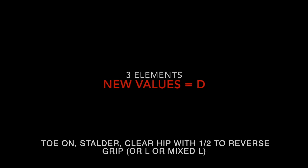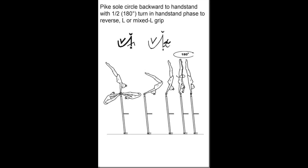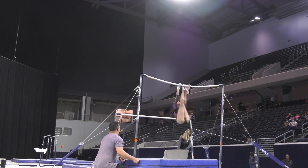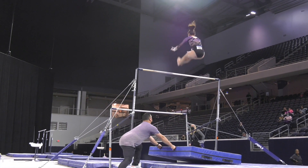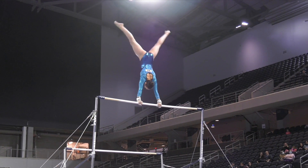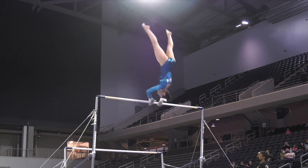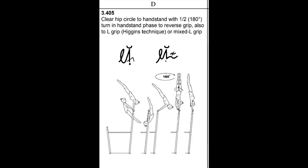There are some new D elements — skills that were in the group 3, 6, and 7 category: toe-ons, clear hips, and stalders with turns. We changed the value of all the half-turning ones that go to a different grip — they went to D. The stalder was already a D for college, but the others were not.